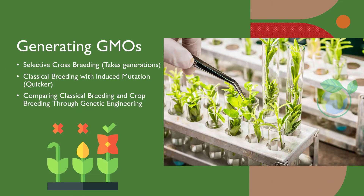Cross breeding, selective breeding, and mutation breeding are examples of traditional ways that humans have used to modify crops and animals to suit their needs, which include higher crop yields, longer storage life, and improved nutrition, amongst other desirable traits.